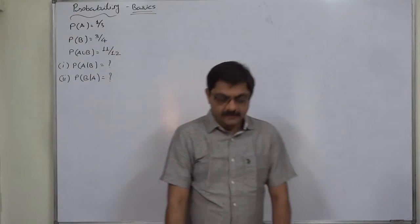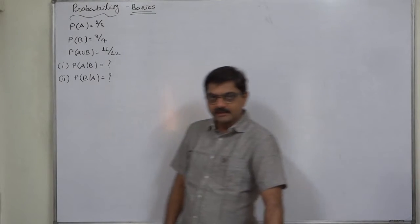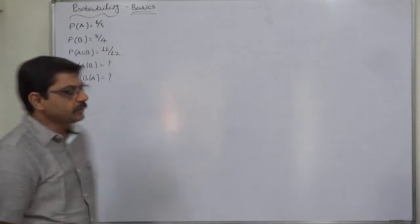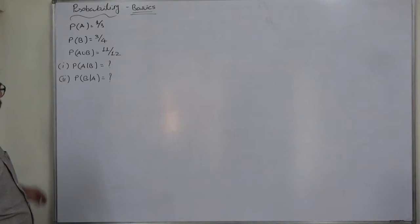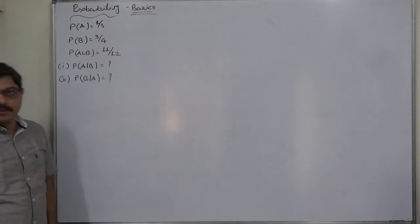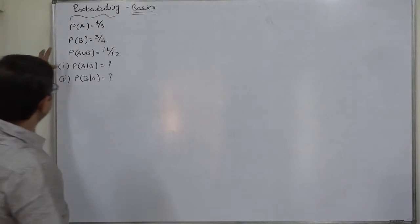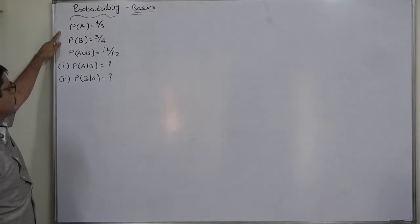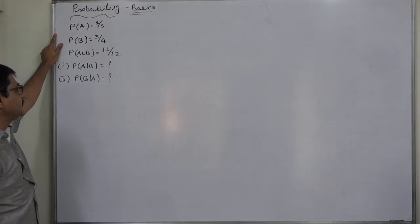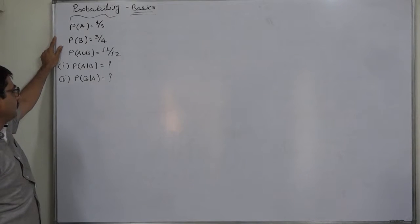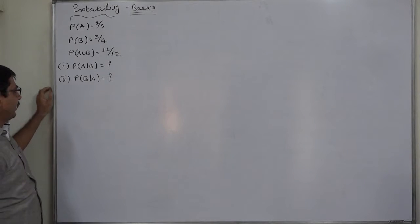Hello friends. Now a new case in basics of probabilities — this time we are going to discuss the calculation of conditional probabilities. The information available is: P(A) = 1/3, P(B) = 3/4, and P(A∪B) = 11/12.